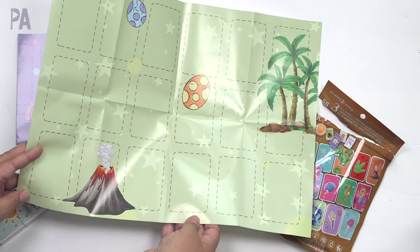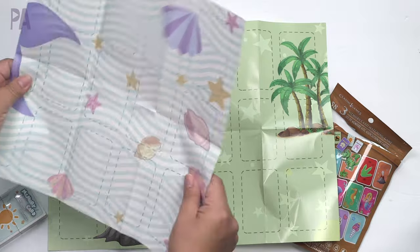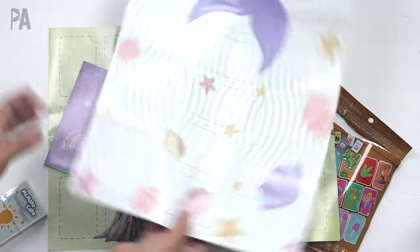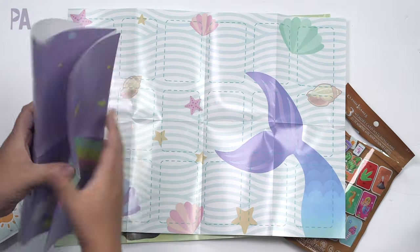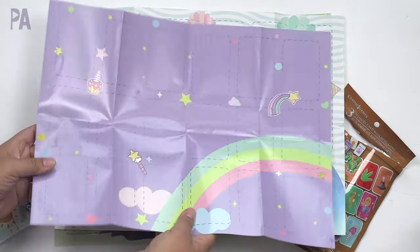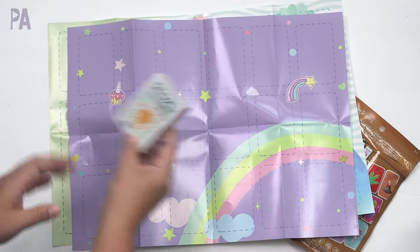So they give you a game board. This looks like volcano with dinosaur eggs, maybe. Oh, this one is a mermaid theme. Under the sea theme with some seashells and a mermaid tail. And then one more. Okay. This one, we've got a rainbow, cupcakes, shooting stars.